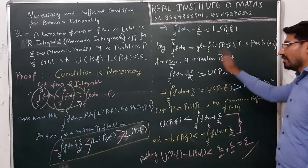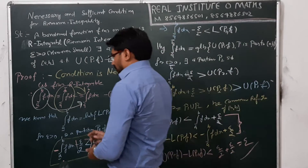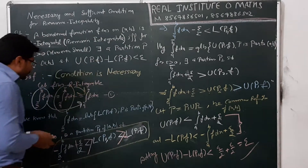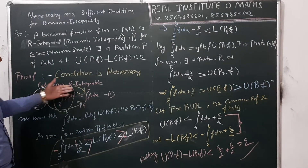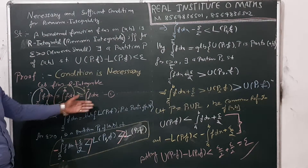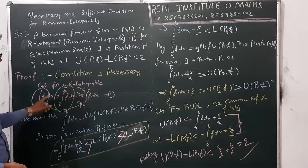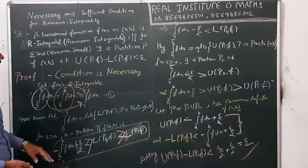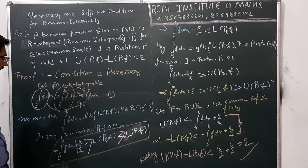So this is our necessary condition. If the function is Riemann integrable, then the lower Riemann integral is equal to the upper Riemann integral, and that is equal to the integral from A to B of F dx.